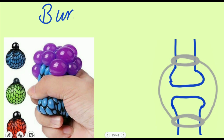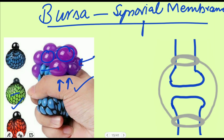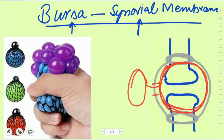A bursa is derived from the synovial membrane. When there is a gap in the capsule, the delicate synovial membrane protrudes out, forming a small pouch outside the capsule. This outpouching of the synovial membrane outside the capsule is known as a bursa. Think of it like a stress ball where applying pressure causes small pouches to protrude out.